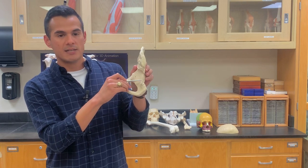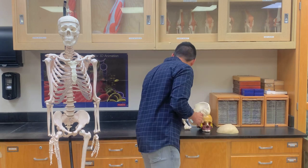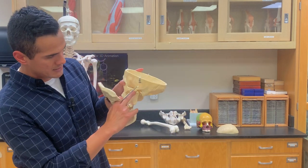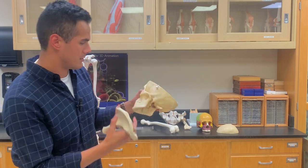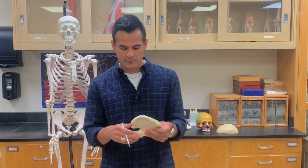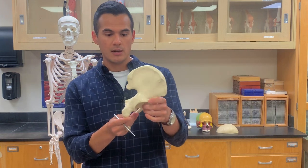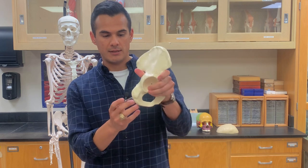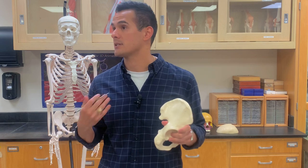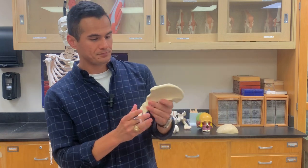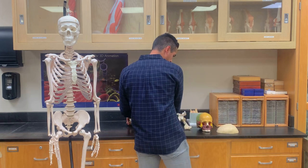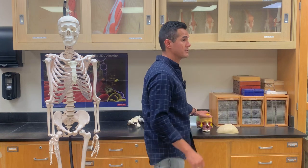You can compare the sciatic notch with what's on the skull — this is the mandibular notch. Very similar; we're just naming them based on location. The last one I wanted to point out is here on the bottom — this is the ischial tuberosity, which is what you're sitting on.